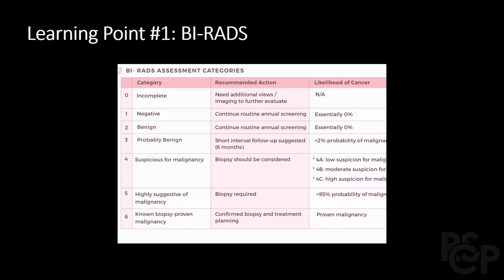This brings us to our first learning point: what is BIRADS? BIRADS is an assessment categorization system for breast radiology. The categories range from zero to six — zero being an incomplete imaging study, one through three being negative or benign most likely, with recommendations to continue annual screening or increase the interval to something like six months if probably benign.